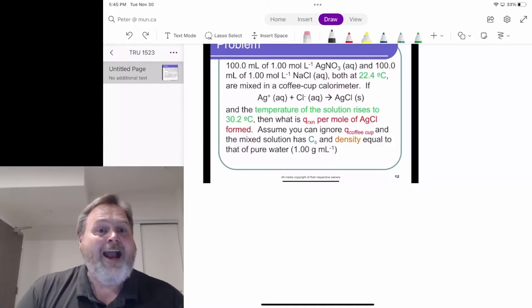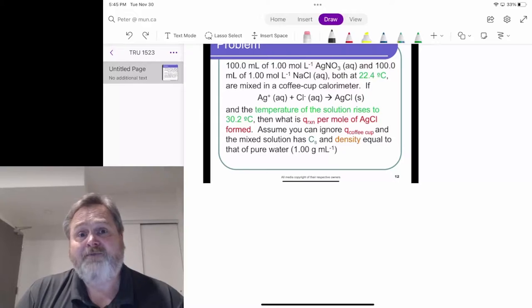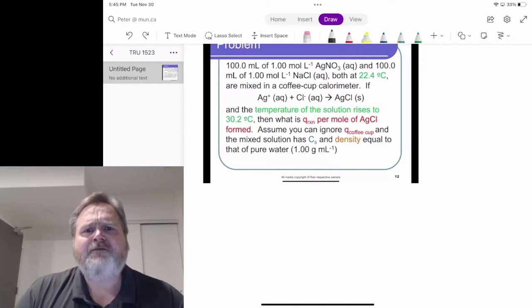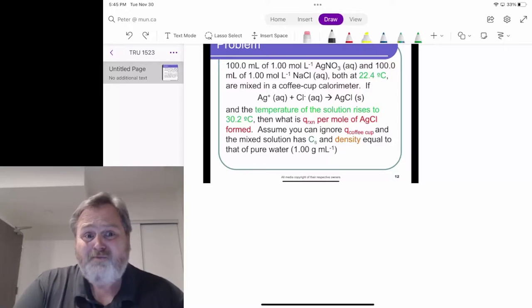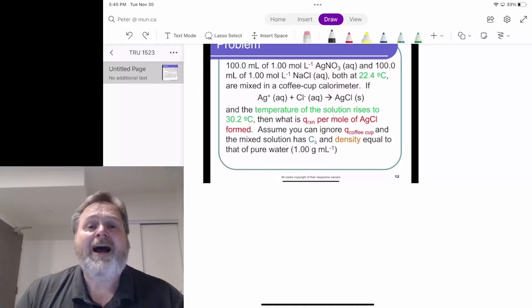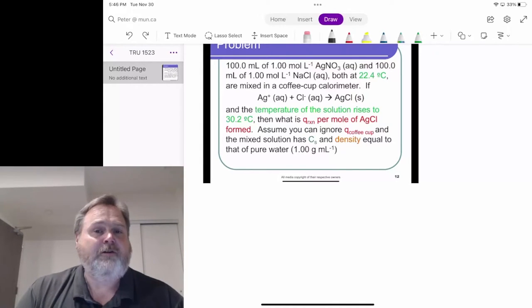We're going to mix them together and a specific chemical reaction is going to happen. The aqueous silver ions and chloride ions are going to mix together and form solid silver chloride. When we do this, the temperature of the solution rises to 30.2 degrees Celsius. The water is increasing in temperature. There has been heat released by this formation process.